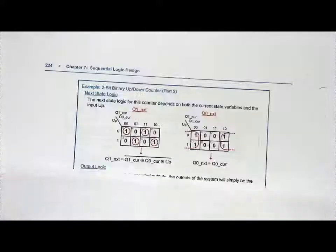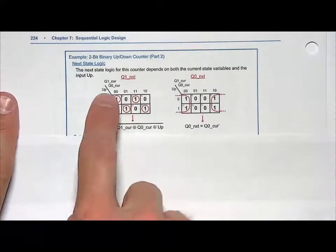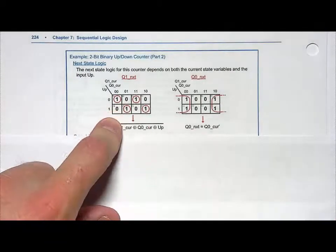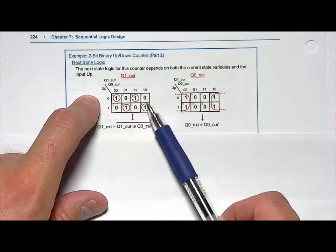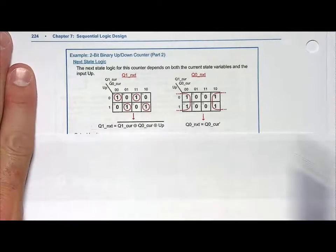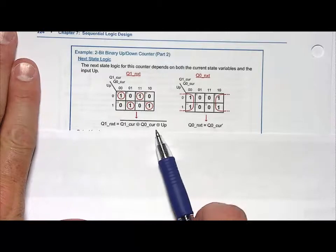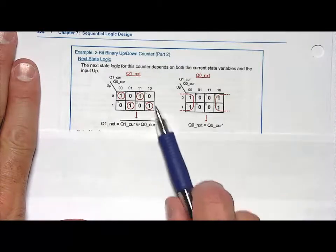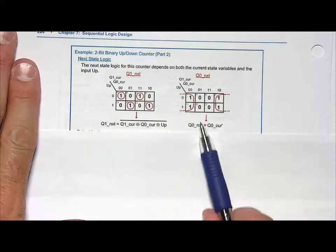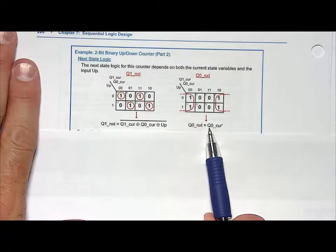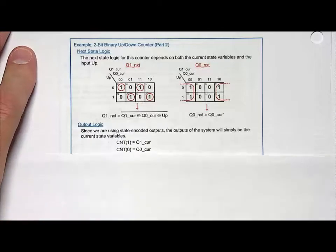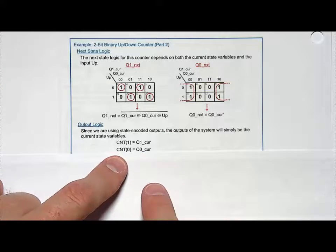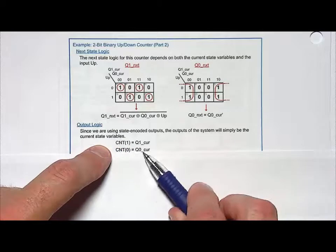Let's put those values directly into a K-map. For q1_next, there's no Boolean minimization possible, but I can recognize a checkerboard pattern — that's an XNOR gate. So q1_next equals q1_cur XNOR q0_cur XNOR up. For q0_next, I was able to group four ones together and get q0_next equals q0_cur complement. So now I've synthesized my next state logic. The output logic synthesis is simply wires, because CNT equals q1_cur and q0_cur directly — that's the magic of state-encoded outputs.